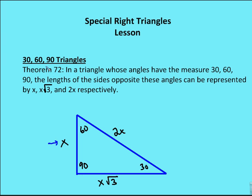So again, theorem 72 in a 30-60-90 triangle: x is the length of the side opposite 30 degrees, x-root 3 is the side opposite 60 degrees, and 2x is the length of the side opposite the 90-degree angle.